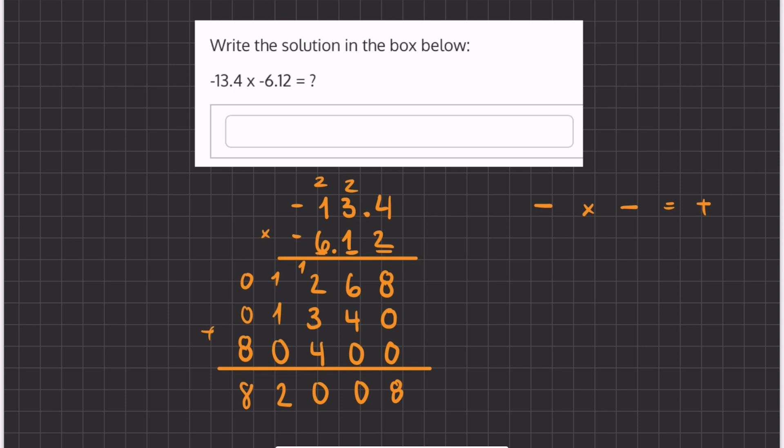So now we're going to count up the places that we have after the decimal in both of the numbers that we multiplied. So we have 1, 2, 3 numbers after the decimal. So that means that we're going to move our decimal place 1, 2, 3 times over.